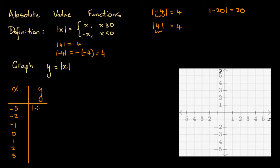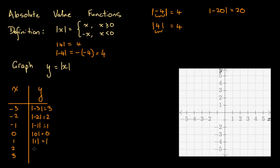The absolute value of negative 3 is just the non-negative value — the magnitude — so this is 3. The absolute value of negative 2, where x is negative 2, gives y equals 2. The absolute value of negative 1 is 1. The absolute value of 0 is 0. The absolute value of 1 — the absolute value of a positive number is just the number itself — so this is 1. The absolute value of 2 is 2, and the absolute value of 3 is 3.